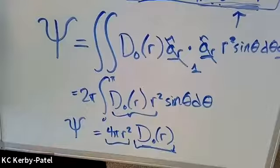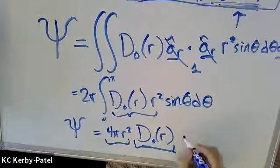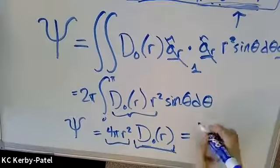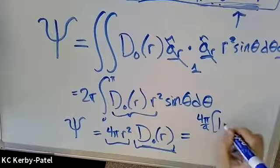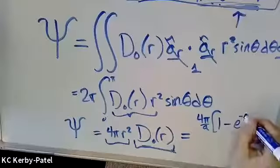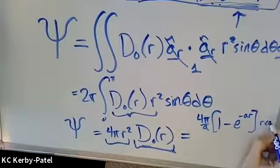That's pretty great. Now we set that equal to the total enclosed charge, which we worked out previously was four pi over a times one minus e to the minus a r for r less than a,